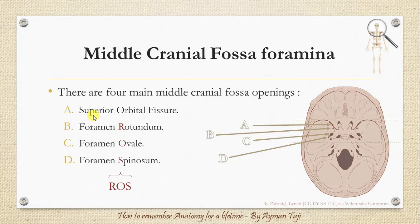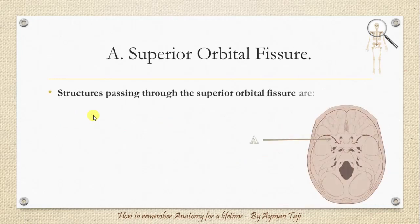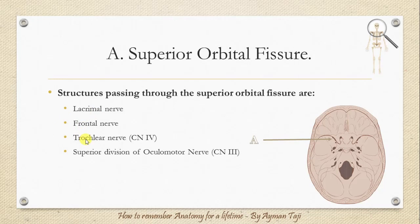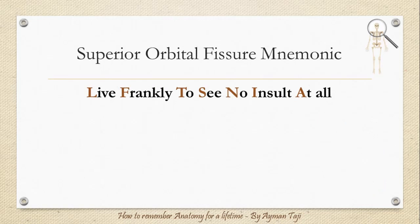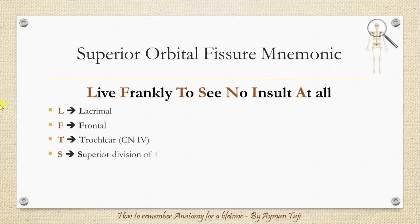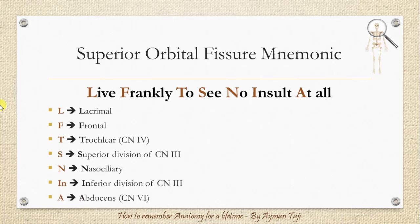Structures passing through the superior orbital fissure are: lacrimal nerve, frontal nerve, trochlear nerve, the superior division of the oculomotor nerve, the nasociliary nerve, the inferior division of the oculomotor nerve, and finally the sixth cranial nerve or abducens nerve. You can remember them with the mnemonic: 'Leave frankly to see no insult at all' — lacrimal, frontal, trochlear, superior division of oculomotor, nasociliary, inferior division of oculomotor, and abducens nerve.